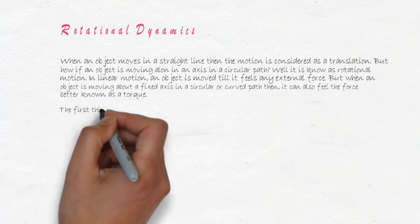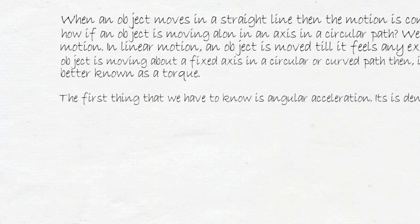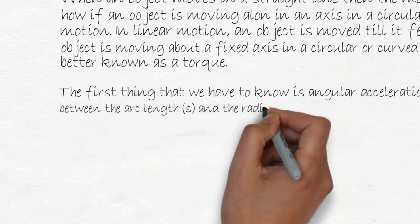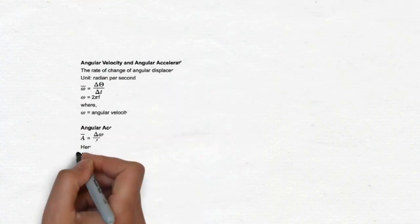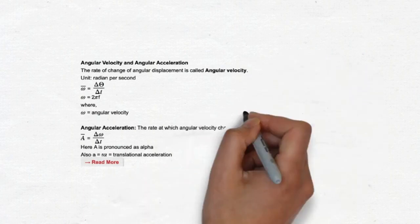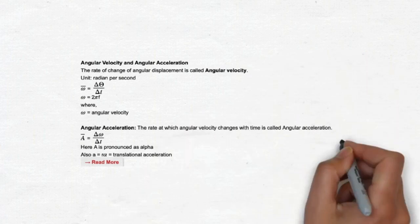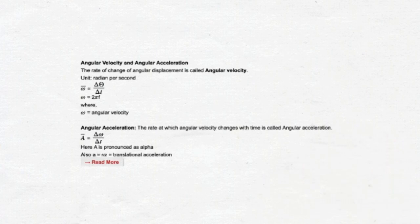The first thing that we have to know is angular acceleration. It is denoted by theta. It is a ratio between the arc plane and the radius of the circle. The next one is angular velocity and angular acceleration. The rate of change of angular displacement is called angular velocity. The next one is angular acceleration. The rate at which angular velocity changes with time is called angular acceleration.